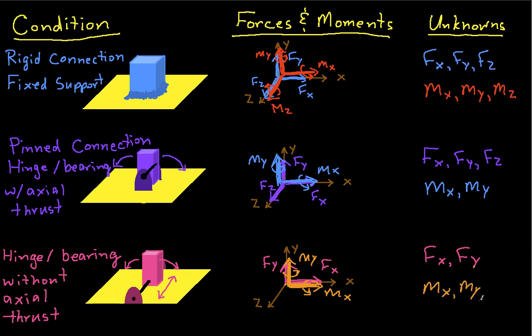So there you have it — six different types of connections, representing the possibilities that show up most often. There is also the case of a cable attached to an object: a cable gives you a force in a single known direction, so the only unknown is typically the tension in the cable. We now have a clear picture of the ways the environment can interact with a body through forces and moments, allowing us to accurately draw free body diagrams.